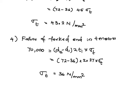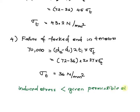Hence we can conclude that the induced stress is less than the given permissible stress, so we can see the joints are safe. From the above dimensions we can design a knuckle pin. Hope it is clear, thank you.